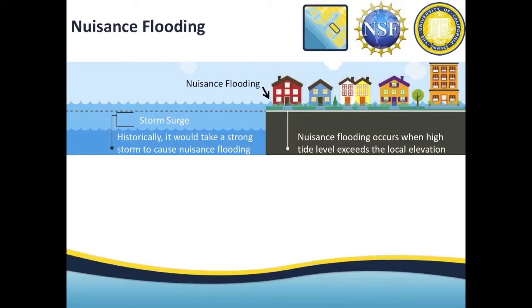Let me start with a quick definition. What is nuisance flooding? It's a relatively new term. Nuisance flooding refers to typically minor and non-destructive flood events in coastal areas dominated by sea water. I can explain it with this simple schematic: when water level exceeds your local elevation, you get flooded in your coastal area. This can be caused by high tide, a storm surge, or a combination of both. This is what we call nuisance flooding.